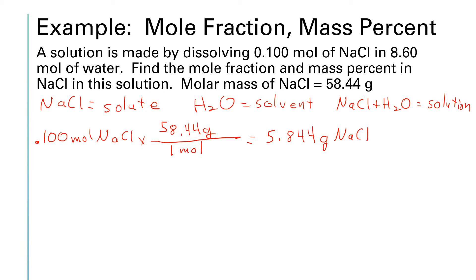For water, we have 8.60 moles. For every one mole of water, we have 18.02 grams. That's just taking 16 for oxygen and 1.01 for each hydrogen, and there are two of them, giving a total of 18.02. So if I multiply 18.02 times 8.6, I get 154.97 grams of water.